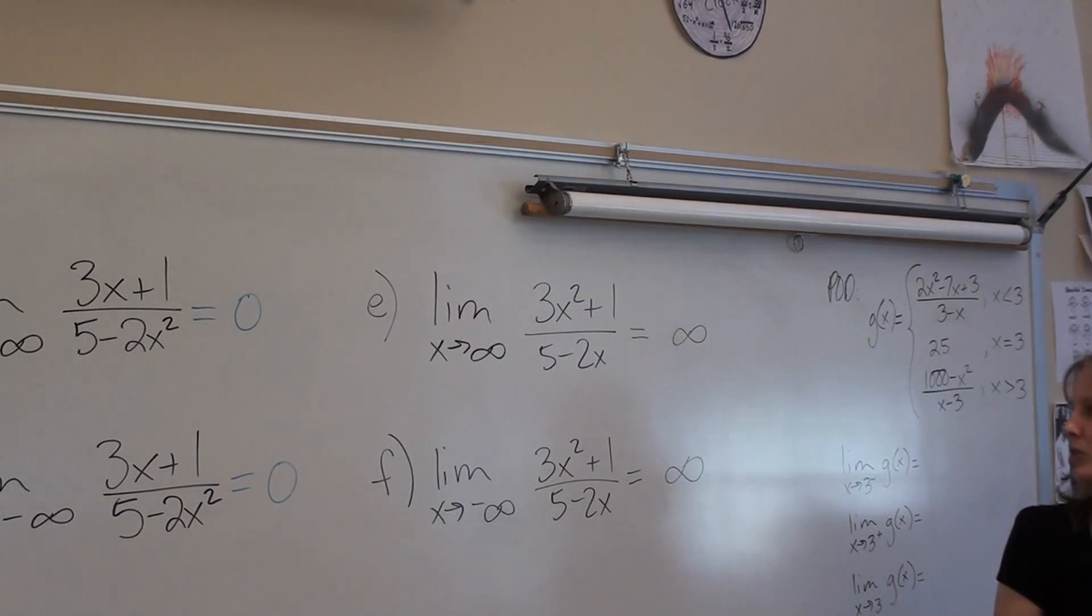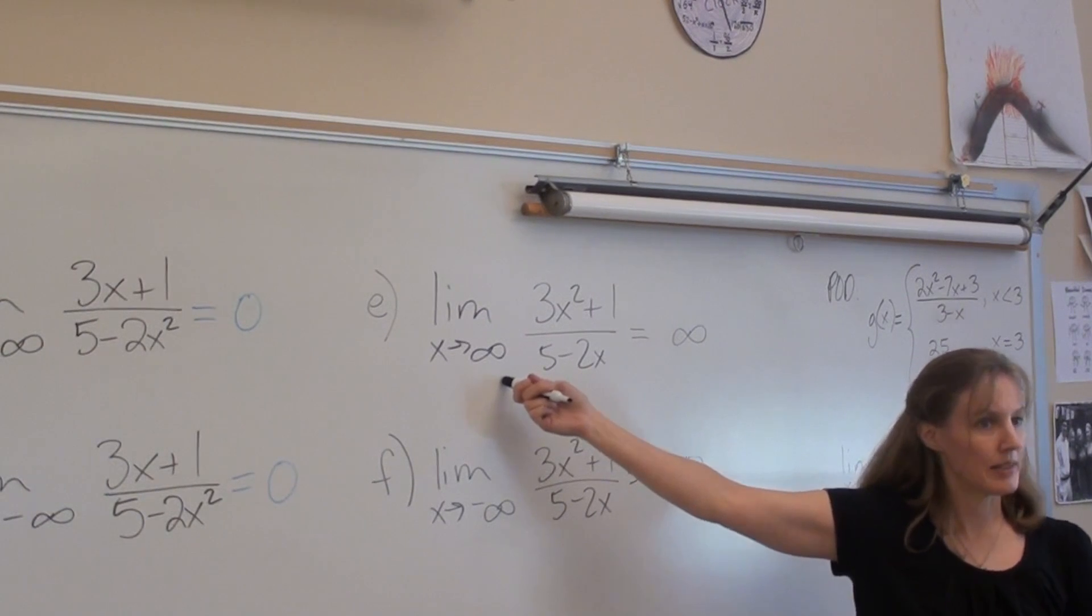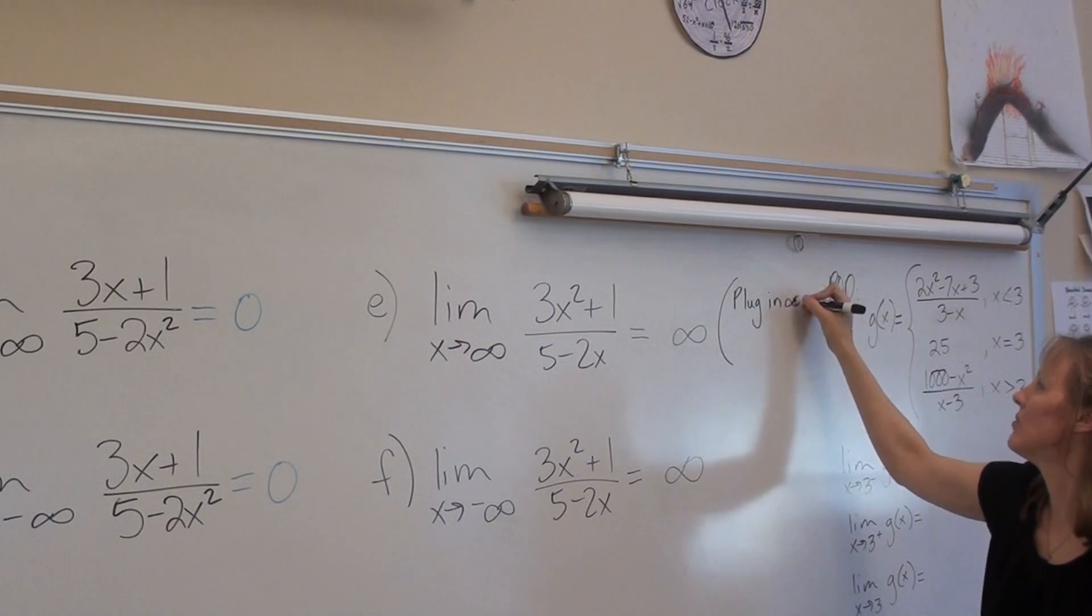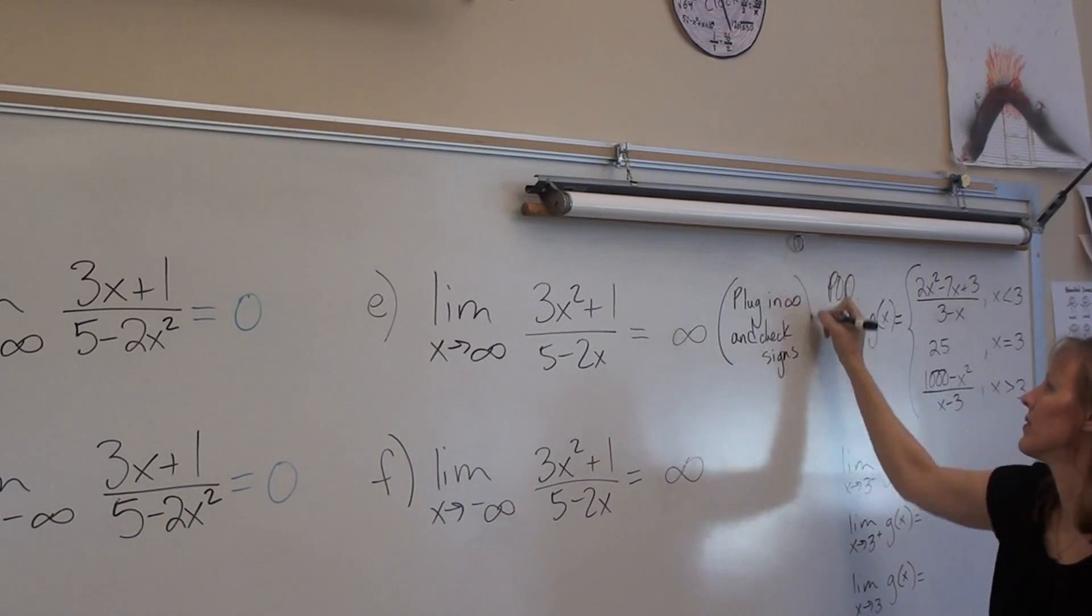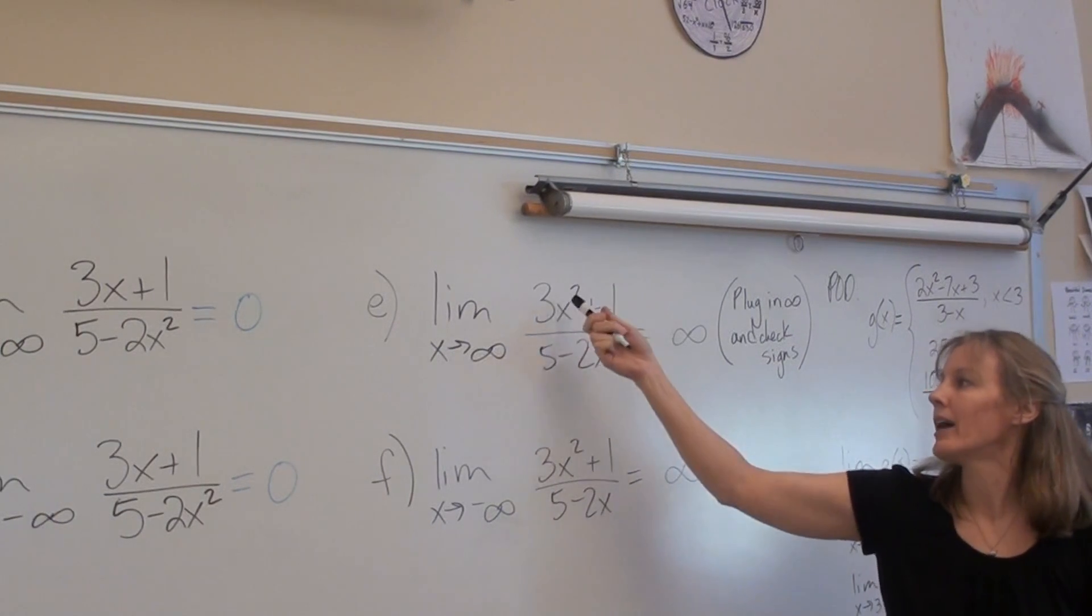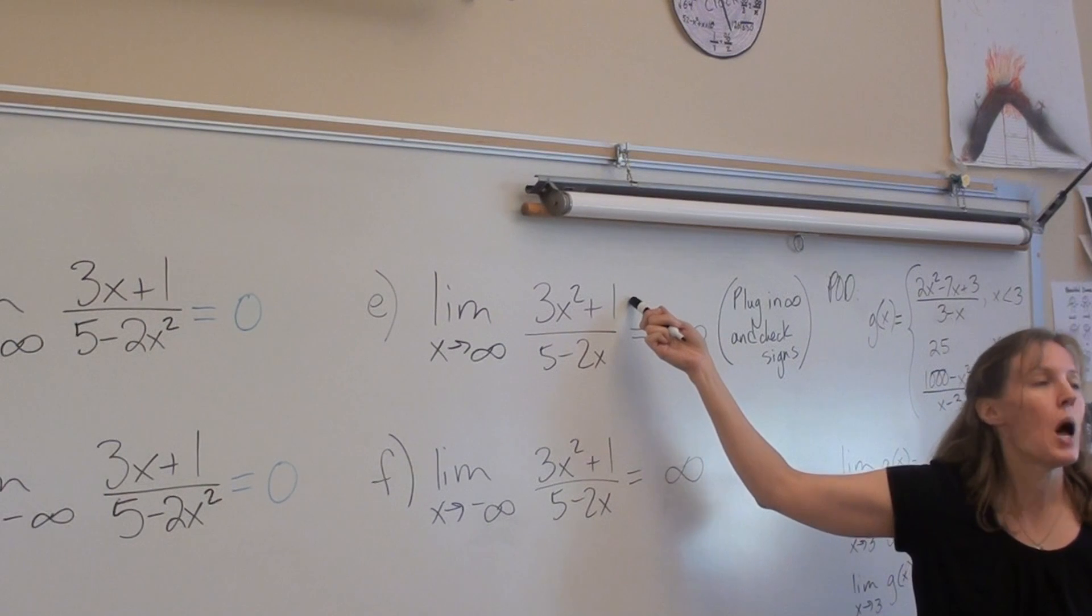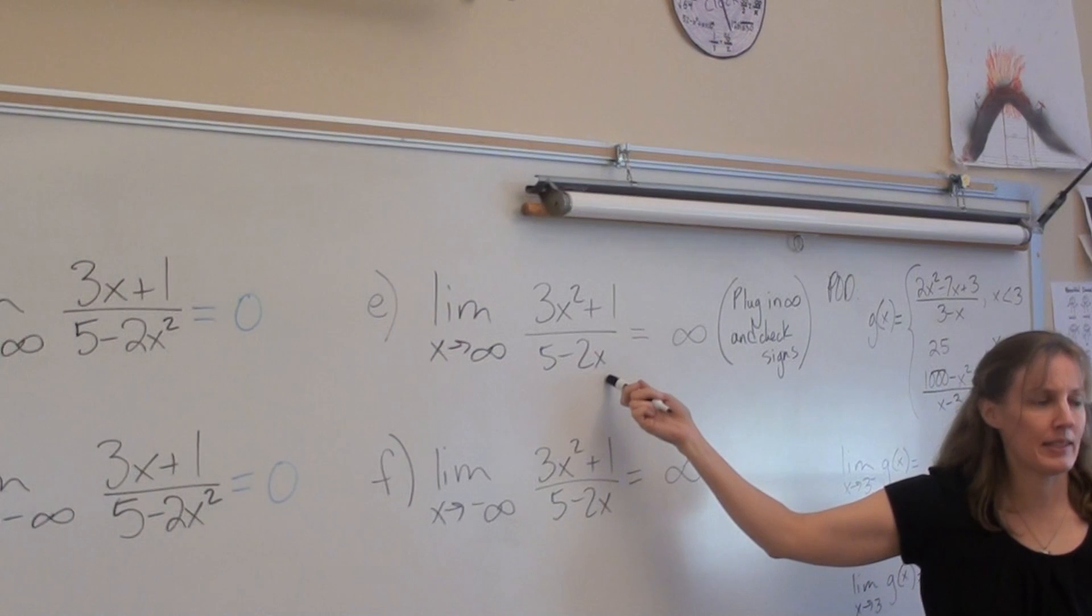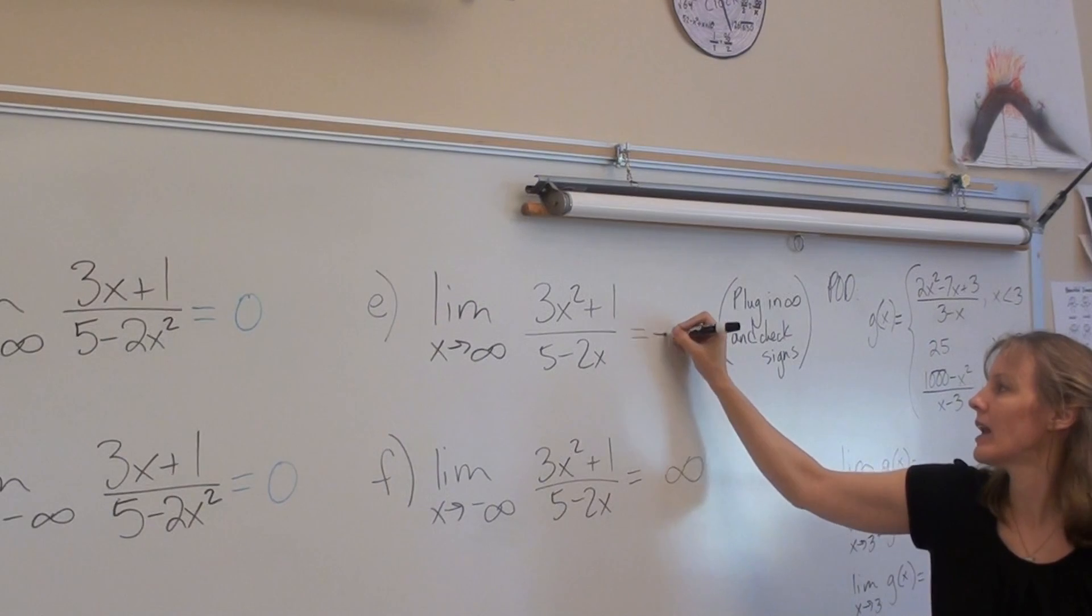How do we know which one? Plug in the infinity and check the signs. So for this one, if I plug in infinity on top, 3 times infinity squared plus 1 is what? Positive. 5 minus 2 times infinity is? Negative. A positive over a negative? Negative.